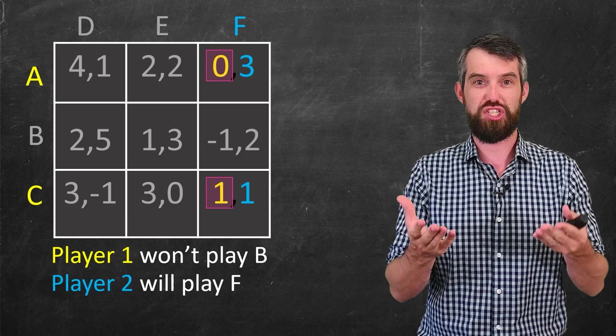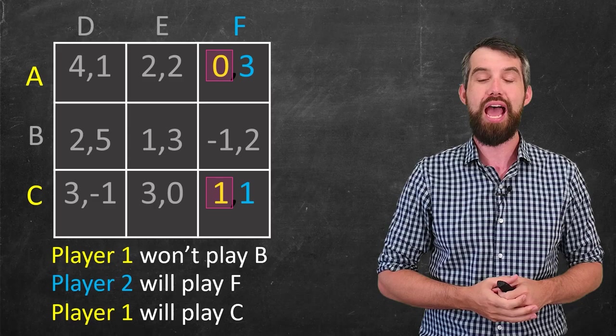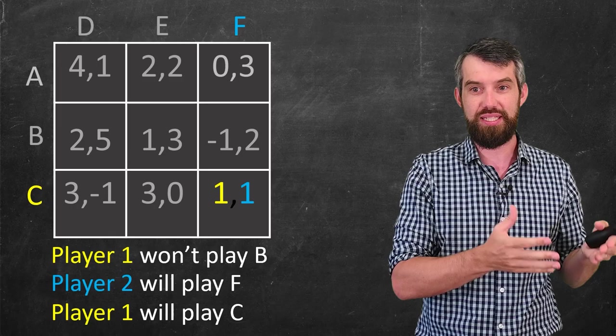they're just trying to decide, is zero better? Or is one better? Well, one is better, and so player one now is going to play C. So the final outcome to this game is that player one is going to play C, and player two is going to play F, and then they're both going to get one unit of payoff.